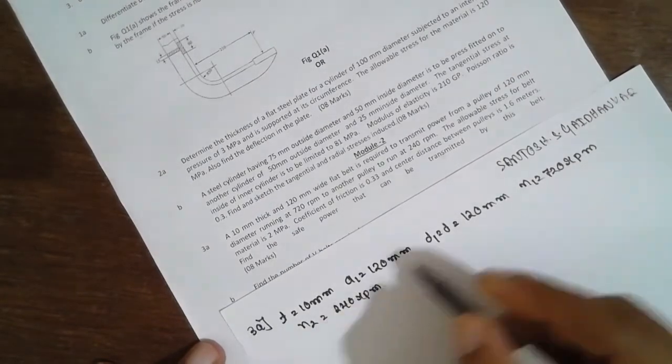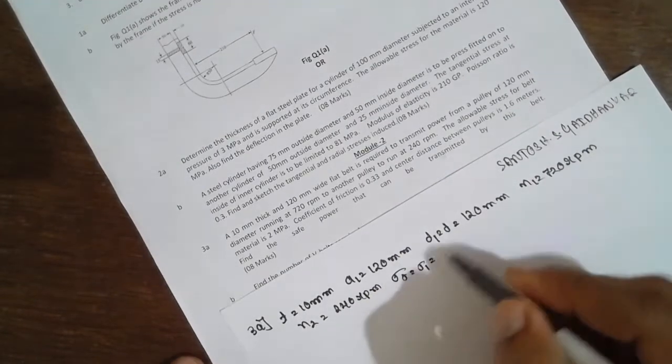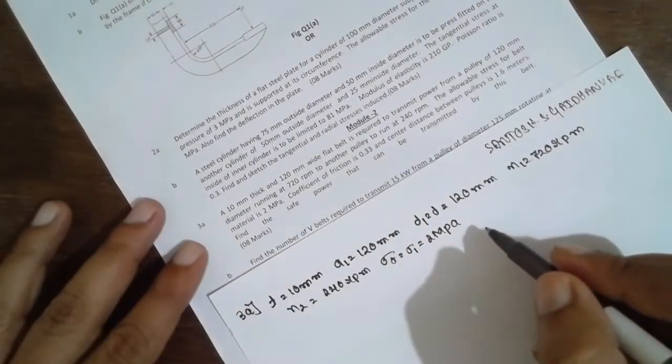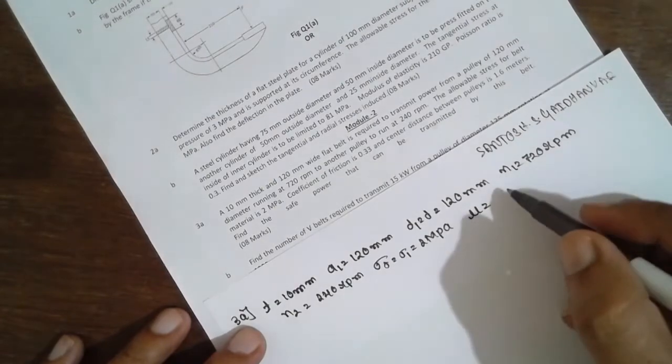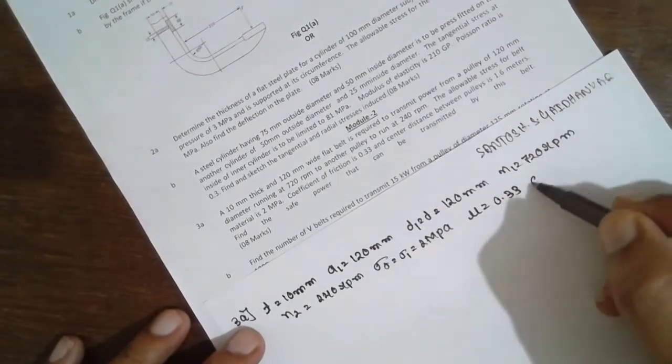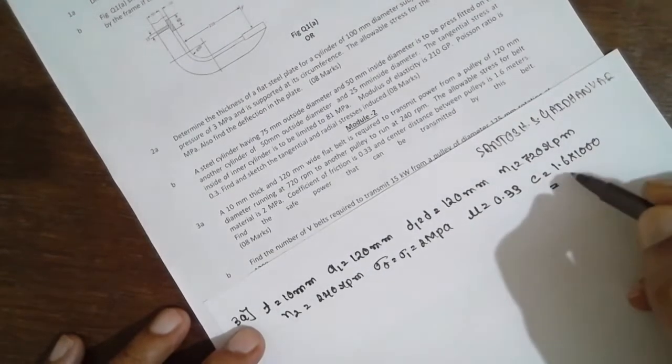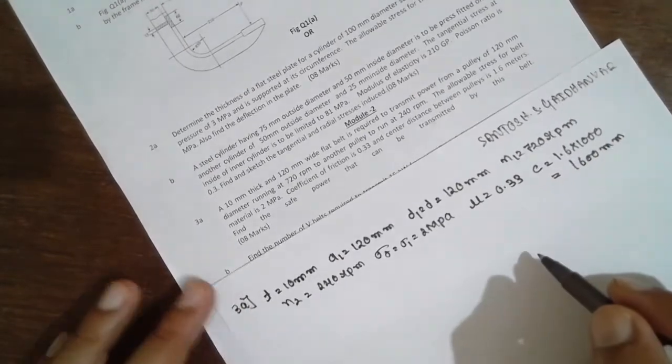Allowable stress sigma_d or sigma_1 is 2 MPa. Coefficient of friction mu is given, therefore mu theta_s is 0.33. Center distance c is 1.6 into 1000, we will get 1600 mm center distance.